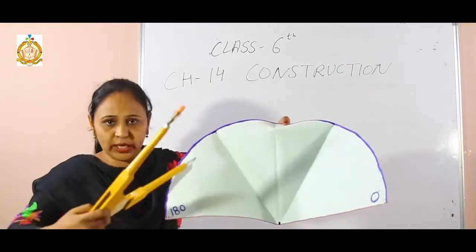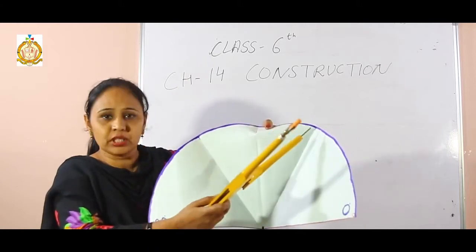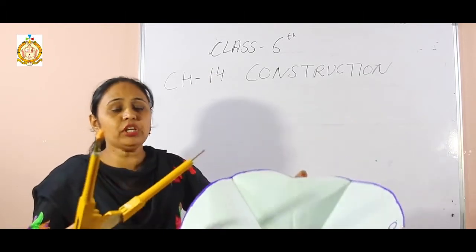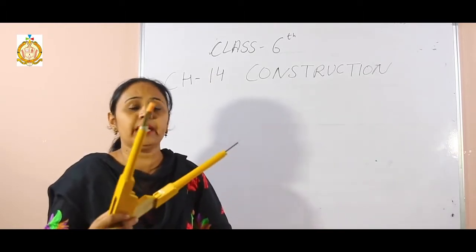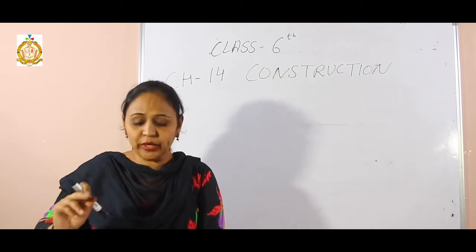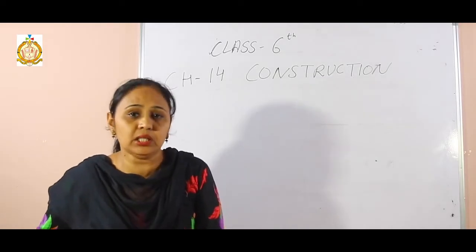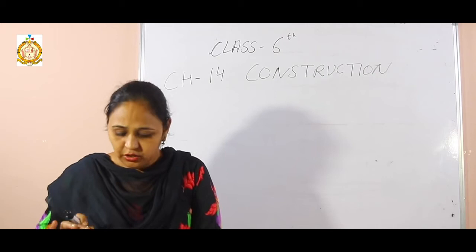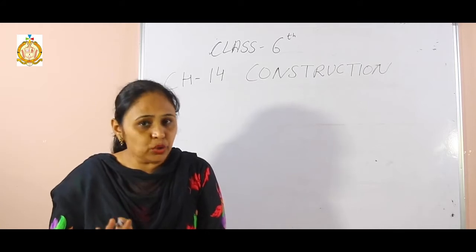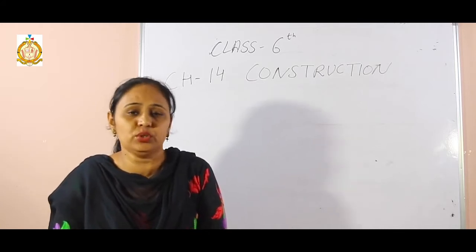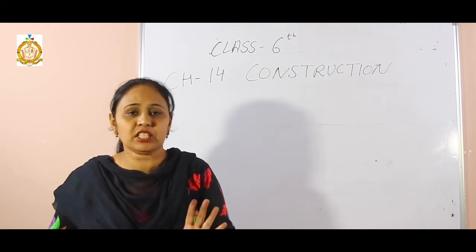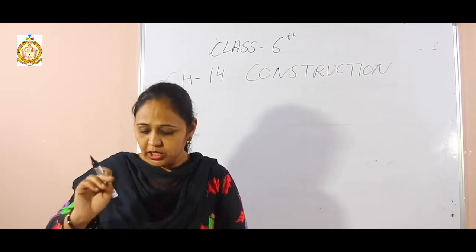Now I am going to construct on the board. The full semicircle is 180 degrees. First arc is 60, second arc is 120, third arc is 180. We will use 60, 120, and 180 for our construction. Note: in exercise 14.1, sum numbers 1 and 3 are not in your syllabus. Only sum numbers 2, 4, 5, and 6 are in your syllabus. Exercise 14.2 is also not in your syllabus.